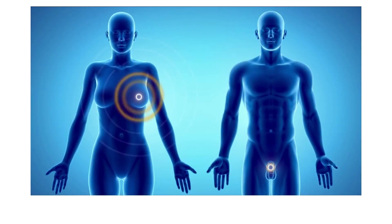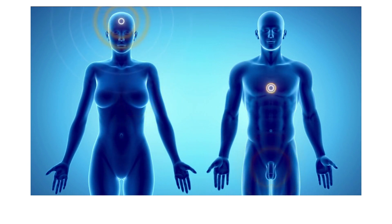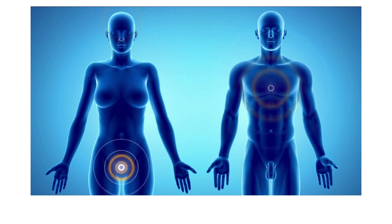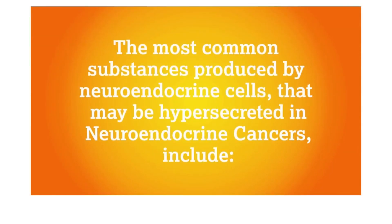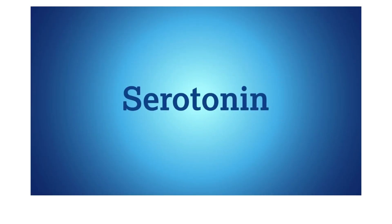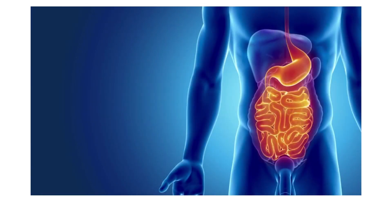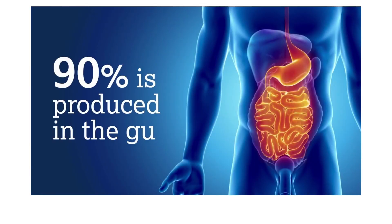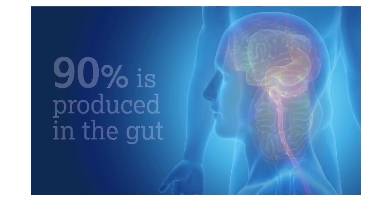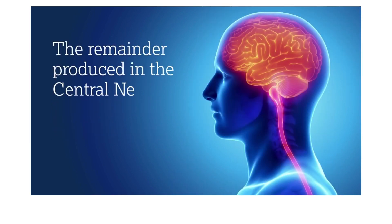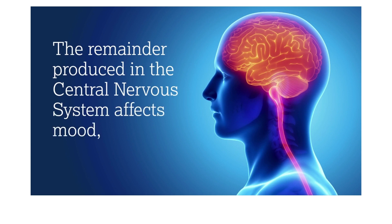In assessing patients, the rate of growth and grading, alongside the presence or absence of comorbidities, must also be considered. The most common substances produced by neuroendocrine cells that may be hyper-secreted in neuroendocrine cancers include serotonin, which is synthesized from tryptophan, one of the eight essential amino acids obtained from food. About 90 percent is produced in the gut, where it helps to regulate gut function. The remainder, produced in the central nervous system, affects mood, appetite, and sleep, with no blood-brain barrier crossover.